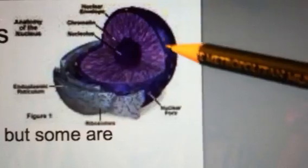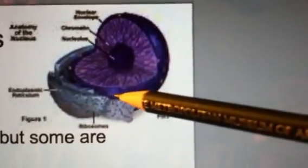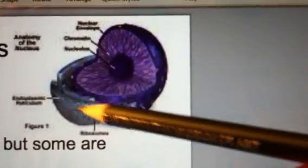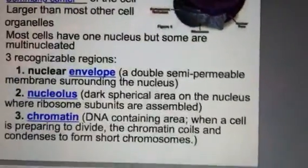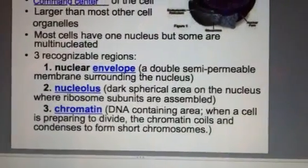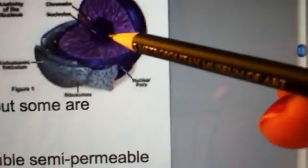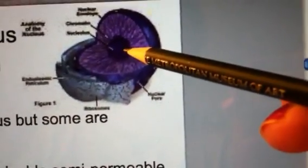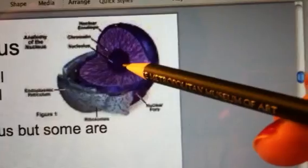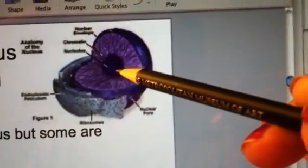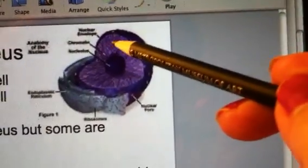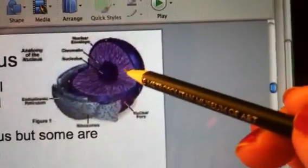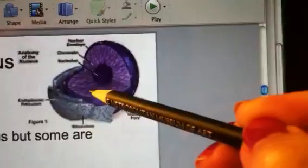The first region is the nuclear envelope — the outer membrane that surrounds the nucleus, just like an envelope encloses a letter. The second region is the nucleolus, a very dark, spherical area that stains dark. This is where ribosome subunits are assembled, and we'll talk more about ribosomes shortly.